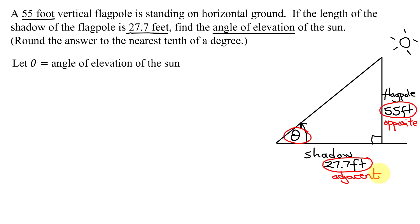So I'm going to be looking for a trig function that combines the sides opposite and adjacent. So here is my mnemonic, SOHCAHTOA. And which of these three trig functions—sine, cosine, and tangent—involves opposite and adjacent? That is the tangent function. So I know that the tangent of theta is the opposite over the adjacent.